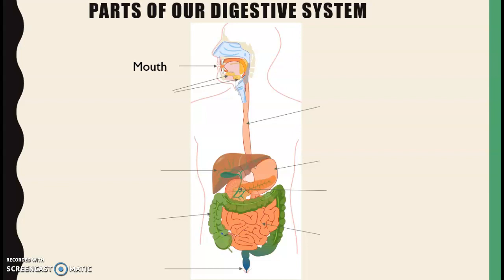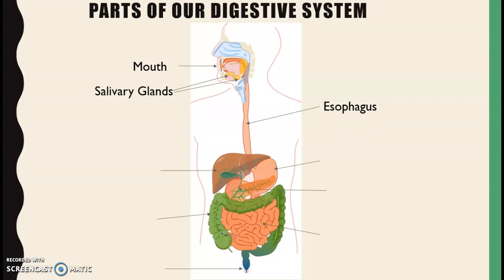Our digestive system has many parts which allow the digestive process to work properly. If you know the names of some of these parts, say them along with me. The first one is the mouth. The part of our digestive system which produces saliva is called the salivary glands.